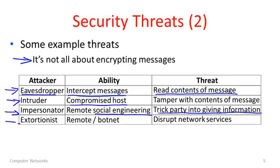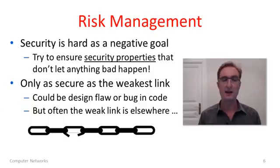The same sort of thing can go on in the network — all of these phishing attacks and something else. And here's yet another threat that's really very different from encrypting messages: the threat of availability, about disrupting network services. An extortionist, for instance, might have a botnet with many many remote machines which could somehow jam up the network by sending a lot of traffic. This is also a kind of security — a very different threat than encrypting messages for secrecy.